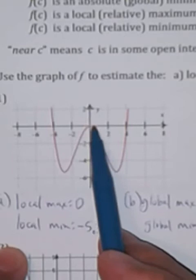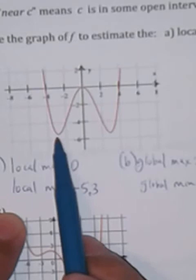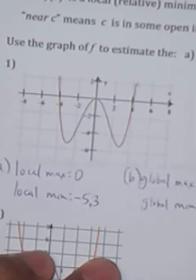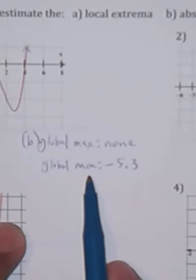Let me zoom in. So again: local max is right here at the hilltop, y equals 0. Local min — valley or upside-down hilltop — is about negative 5 point something. Global max: there is none because this graph keeps going forever (those are meant to be arrows). Global min: negative 5.3.